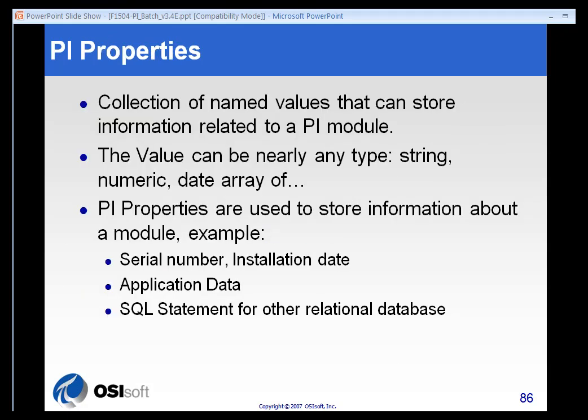Properties are in some ways the opposite of aliases, in that they contain data that doesn't change. PI tags, being process values, inherently change. PI properties are what we sometimes refer to as constants — values that don't change, or if they do change, they change very infrequently. Some examples might be a serial number of a piece of equipment, the installation date, the last maintenance date, specifications like target temperatures, vibration specs, pressure specifications, or safety data — things that may change over time, but generally don't change very often.